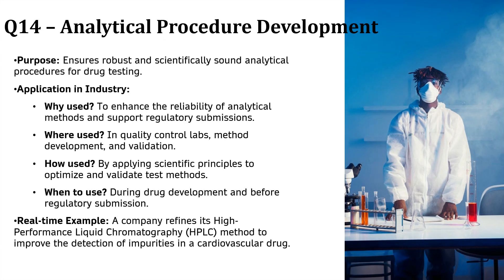Now let's dive into ICH Q14, Analytical Procedure Development. This guideline is all about making sure the analytical methods used in drug testing are reliable, accurate and scientifically sound. In the pharmaceutical industry, we need to be 100% sure that the tests we use to measure drug ingredients and impurities are consistent and precise. If the testing method isn't accurate, we could end up with incorrect dosages, unidentified impurities or even unsafe medicines. For example, imagine a pharma company working on a cardiovascular drug. They refine their HPLC (high-performance liquid chromatography) method to improve impurity detection, ensuring every tablet is safe and effective for patients. ICH Q14 ensures every drug on the market is tested using the best possible methods, keeping medicines safe, effective and reliable.